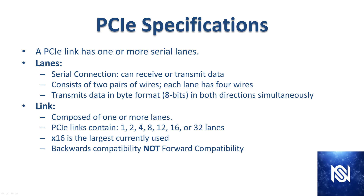Looking at PCIe specifications: a PCIe link has one or more serial lanes. Lanes are a serial connection that can simultaneously receive or transmit data. These lanes consist of two pairs of wires — each lane has four wires — and it transmits data in byte format, meaning eight bits at a time in both directions simultaneously. A link is composed of one or more lanes.